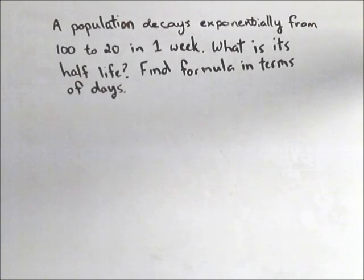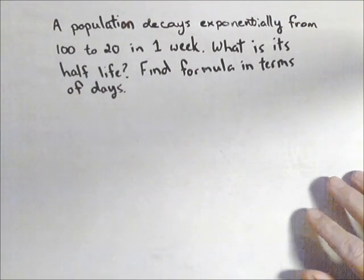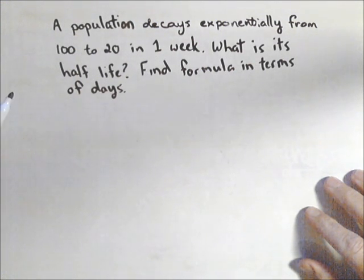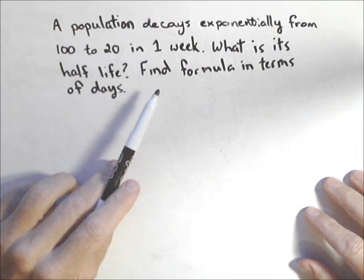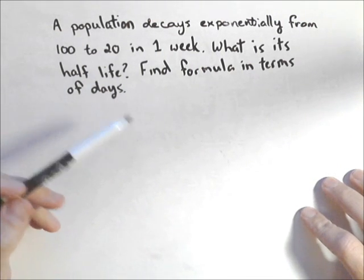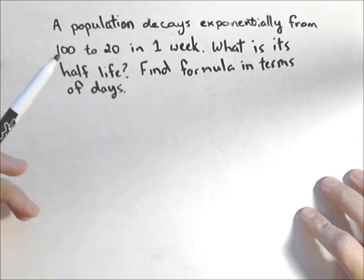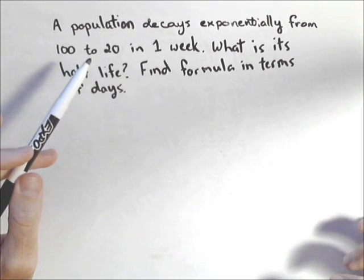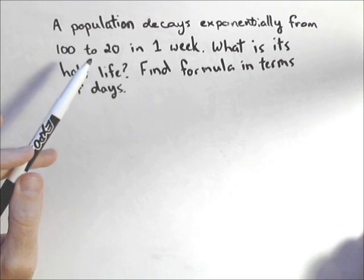In this problem, we're going to talk about finding half-life and creating a formula when we're given that the population decays exponentially and a couple of values. This is very general and can be applied to bacteria, carbon dating, and a whole bunch of different scenarios.